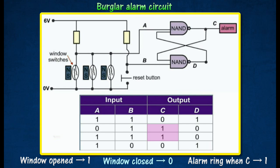The output C remains at logic 1 even after the logic in A has changed from 0 to 1. This means that the alarm continues to ring even after a window is opened and closed again.